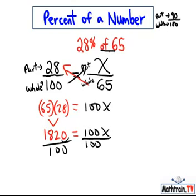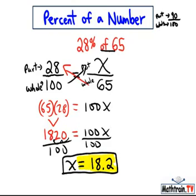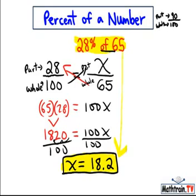And that means decimal point just comes back two places. And we have x equals 18 and 2 tenths, 18.2. So therefore, 28% of 65 is 18 and 2 tenths. Thank you.